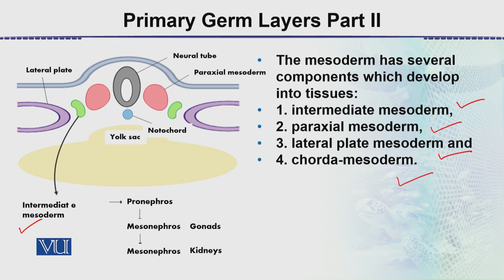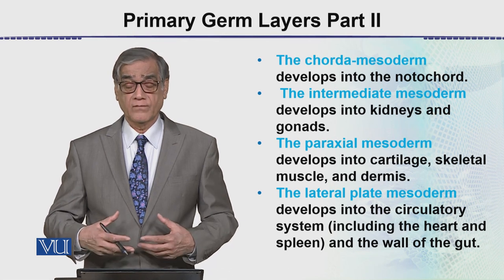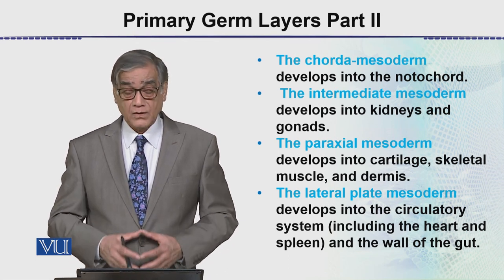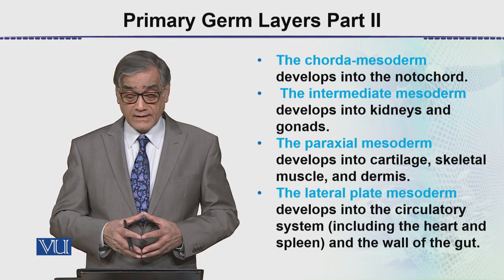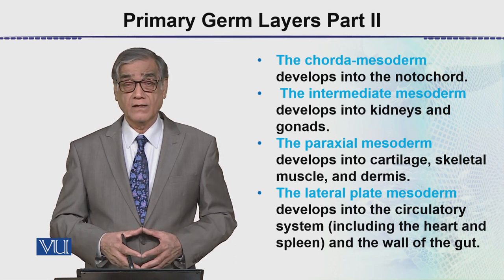We have talked about the mesoderm being divided into: intermediate mesoderm, paraxial mesoderm, lateral plate mesoderm, and chordal mesoderm. The chordal mesoderm forms the notochord, while this neural tube is ectodermal in origin. The chorda mesoderm develops into the notochord, and the intermediate mesoderm develops into the kidneys and the gonads.